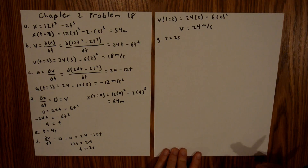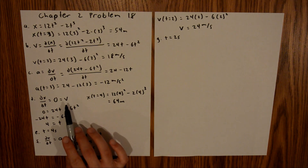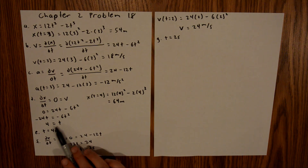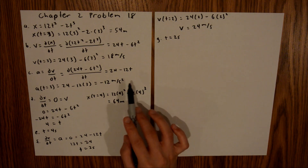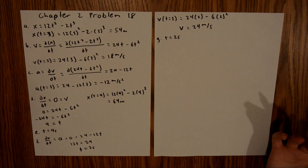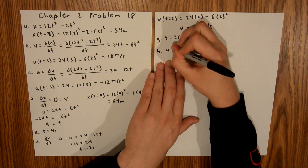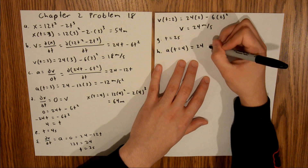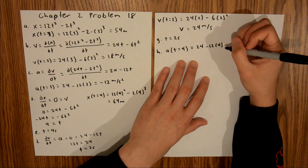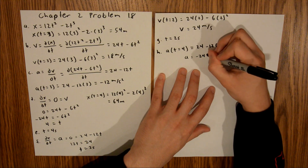For part H, we are asked to find the acceleration of the particle when it is no longer moving, meaning when velocity equals 0. In part D, we found that velocity equals 0 at t equals 4 seconds. So we evaluate our acceleration equation at t equals 4: acceleration equals 24 minus 12 times 4, which equals negative 24 meters per second squared.